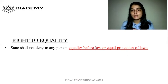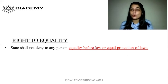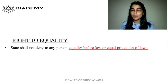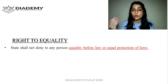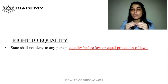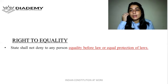In order to understand Article 14, we need to understand what is equality before law and what is equal protection of laws. Equality before law means law is the king — nobody is above the law. Everybody is equal in the eyes of law. So there is rule of law, there is equality before law.